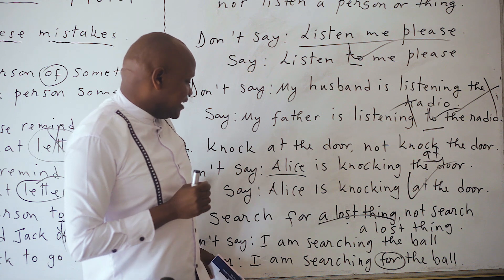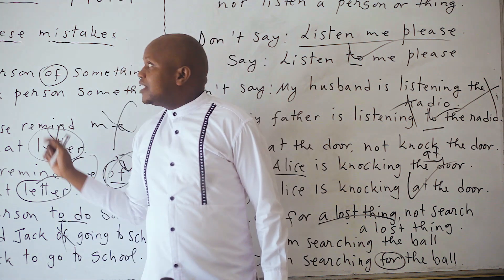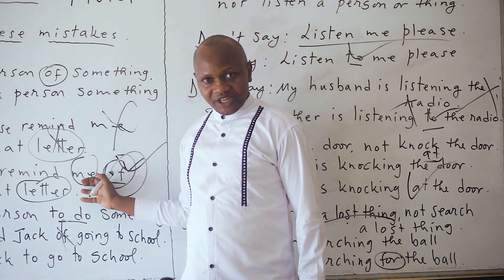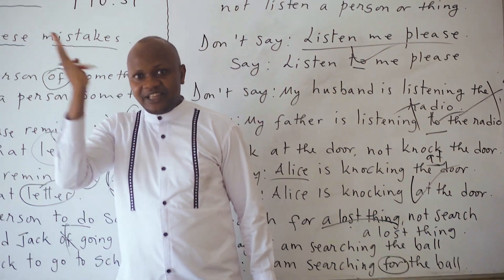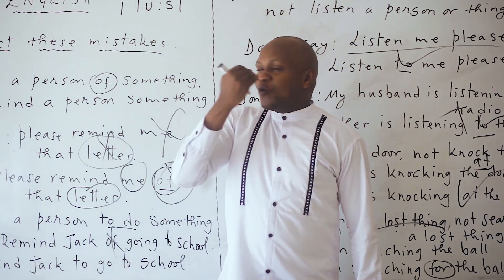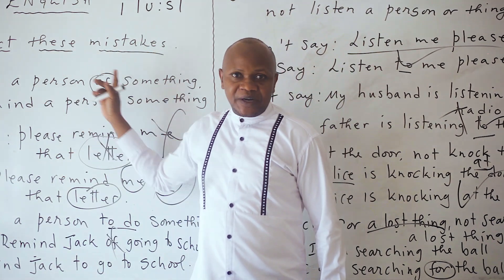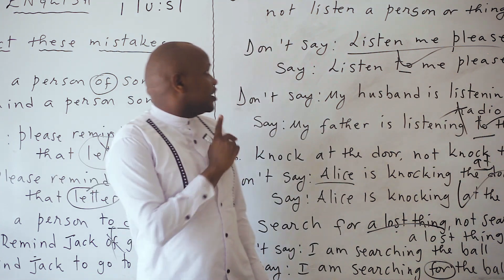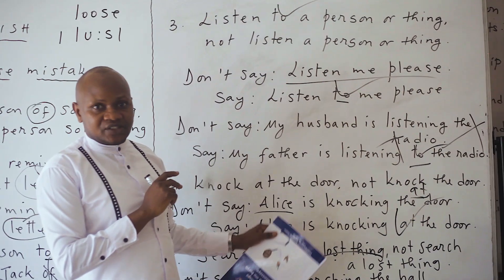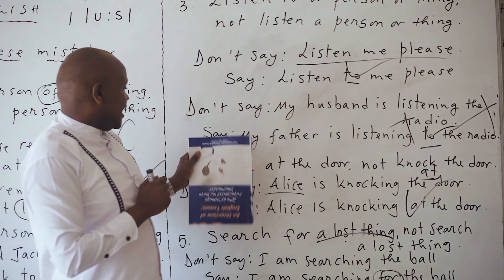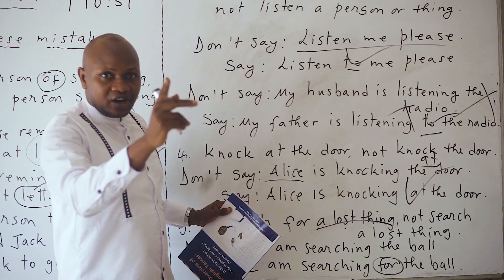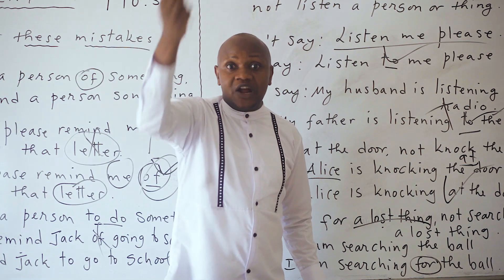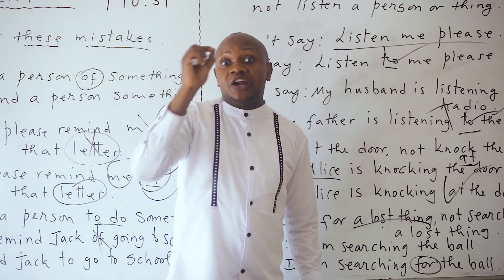Please try your best to grasp these wonderful sentences in English and avoid these mistakes. To summarize: remind a person of something; remind a person to do something; listen to a person or to something; knock at the door; search for a lost thing — not search a lost thing.